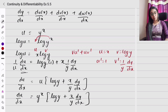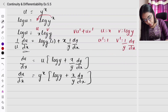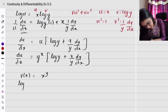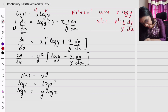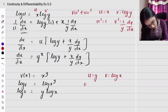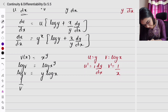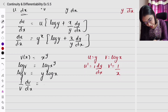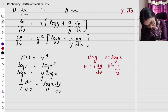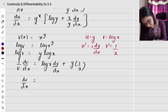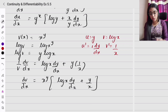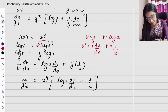Now for dv/dx, where v = x^y. Taking log on both sides: log v = y · log x. Again two functions: u = y, v = log x, so u' = dy/dx and v' = 1/x. Differentiating: (1/v)(dv/dx) = log x · (dy/dx) + y · (1/x). Therefore dv/dx = x^y · [log x · (dy/dx) + y/x].